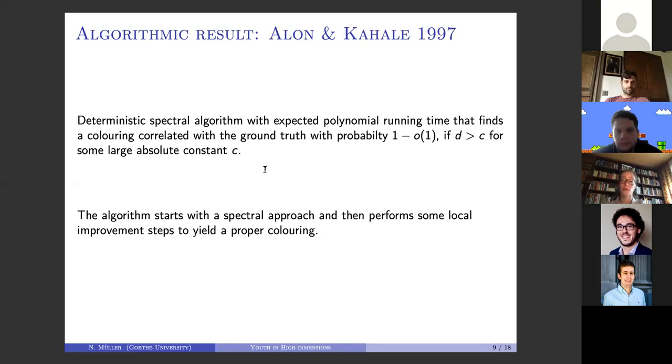This algorithm roughly proceeds in three steps. First, you do some clustering based on spectral methods and the adjacency matrix of a slightly modified graph. The next step, you perform some local improvement. Afterwards, you uncolor some vertices and then color these again by doing some exhaustive search that is compatible with the rest of the coloring. This is a rigorous result from the 90s that finds a coloring—it's not just some assignment of colors to the vertices, but it's actually a proper coloring.